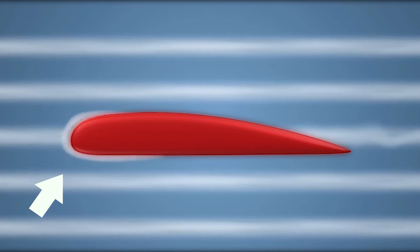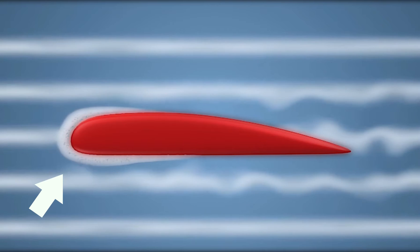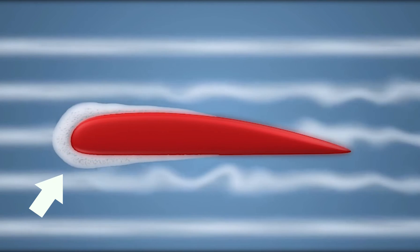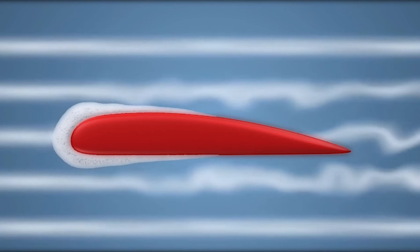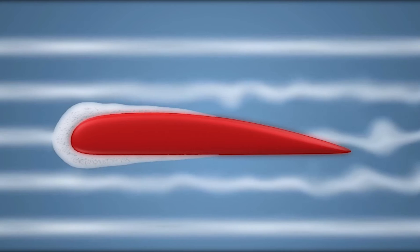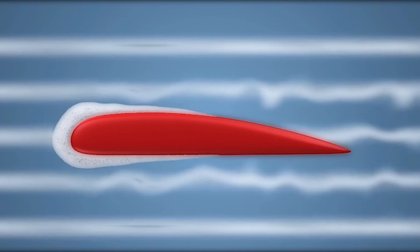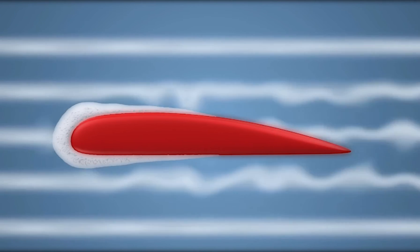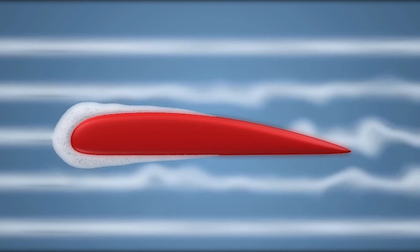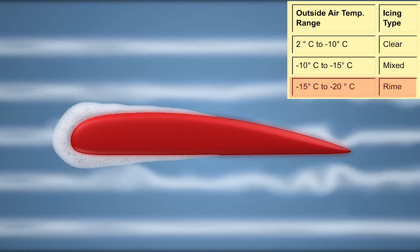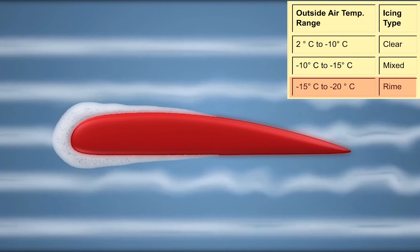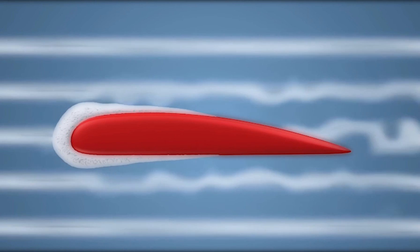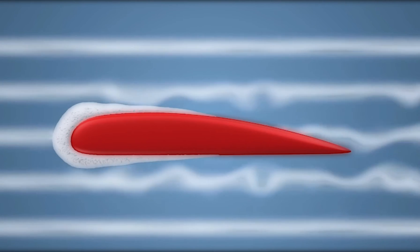In the course of getting frozen, air is trapped giving the ice a milky appearance. It usually forms on the leading edge of airfoils but does not flow back over the wing and tail surfaces. Rime ice generally forms in temperatures ranging between minus 15 degrees Celsius to minus 20 degrees Celsius and is less dense and easier to remove than clear ice.